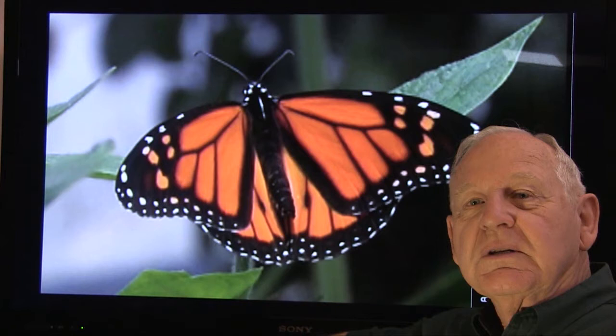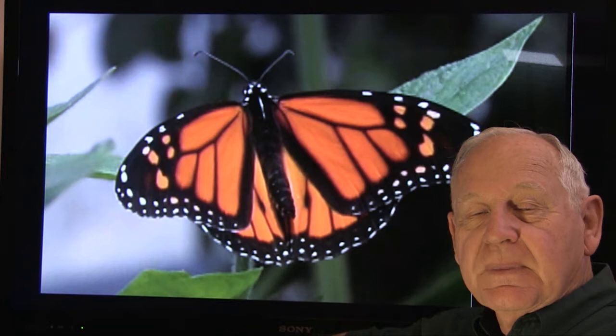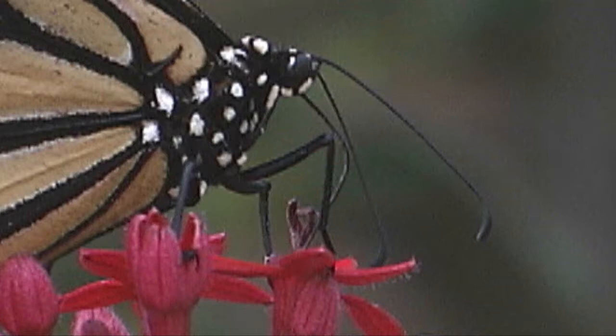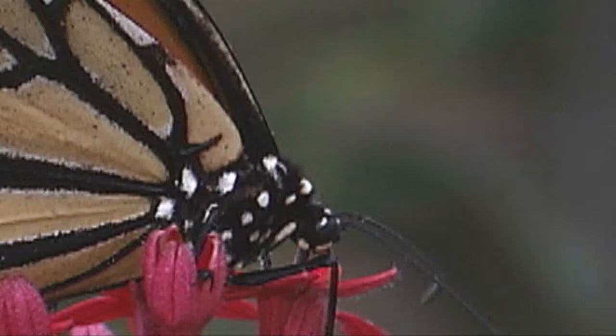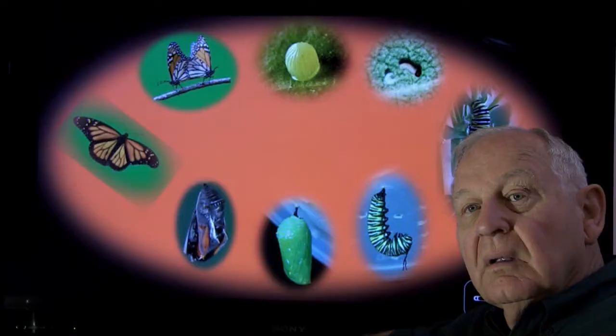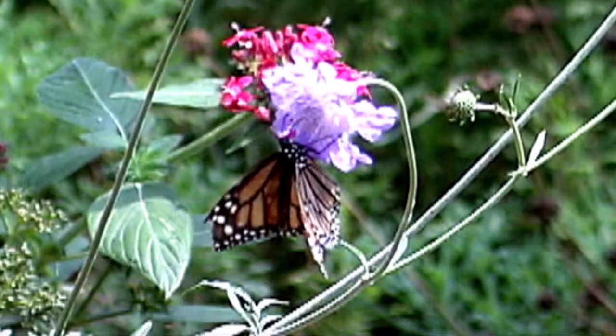This is a monarch butterfly. It's one of my favorite animals. We're starting a series on this beautiful butterfly — we're going to go through its life cycle and the biology of this insect. This is series number one on the life cycle of the monarch butterfly.